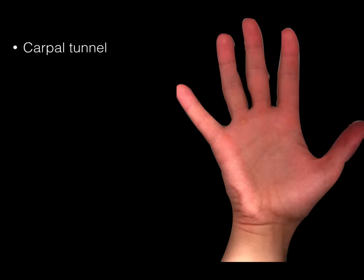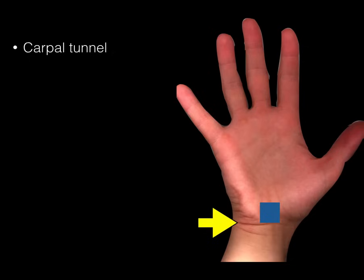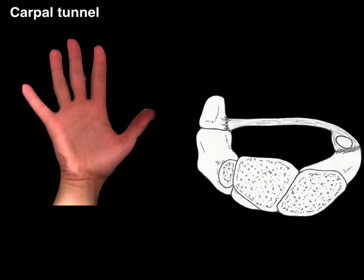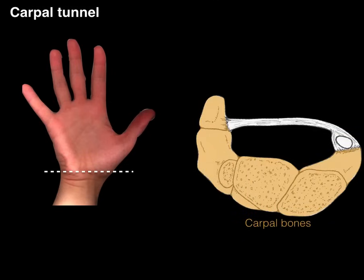Now let's discuss the carpal tunnel in more detail. This is an anterior view of the right hand. Find the crease at the distal part of the forearm, and place about the size of a postage stamp between the thenar and hypothenar eminences, distal to that crease — that's the location of the carpal tunnel. In cross-section, the carpal bones form a concave, bowl-like surface. A lid of dense regular collagenous connective tissue, called the flexor retinaculum, caps it, forming the carpal tunnel.